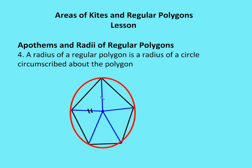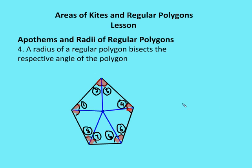Fifth, a radius of a regular polygon bisects the respective angle of the polygon. So all the bisected angles are congruent — in this example there are ten such angles, all congruent because they're bisected by the radii of the polygon.